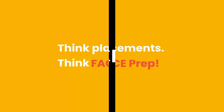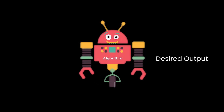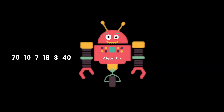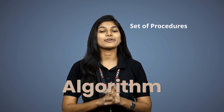In this video, let us have an introduction to algorithms. An algorithm is a well-defined computational procedure that takes a set of values as input and transforms them into the desired output. For example, if we have some numbers as input and we are expecting these numbers in sorted order as output, that is our goal. To achieve this goal we need to follow some set of procedures, and this procedure is called an algorithm.